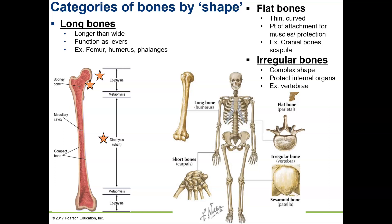Flat bones are very thin and tend to be curved as well. They serve as points of attachment for muscles and provide protection of internal organs. Examples of flat bones include the cranial bones of your skull and your scapula. Irregular bones are named because they don't fit into any other category — they have a complex shape. Examples include vertebrae, facial bones, and the bones around your sinuses.